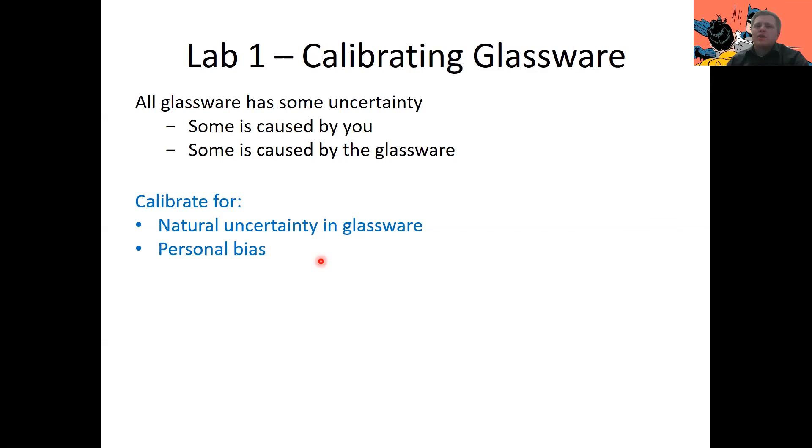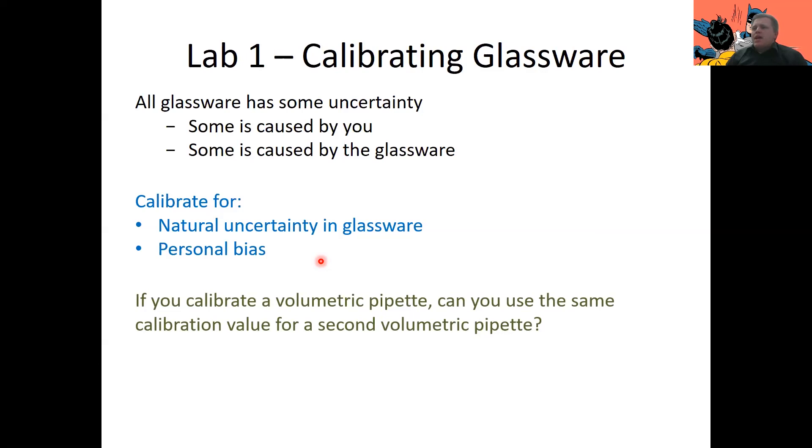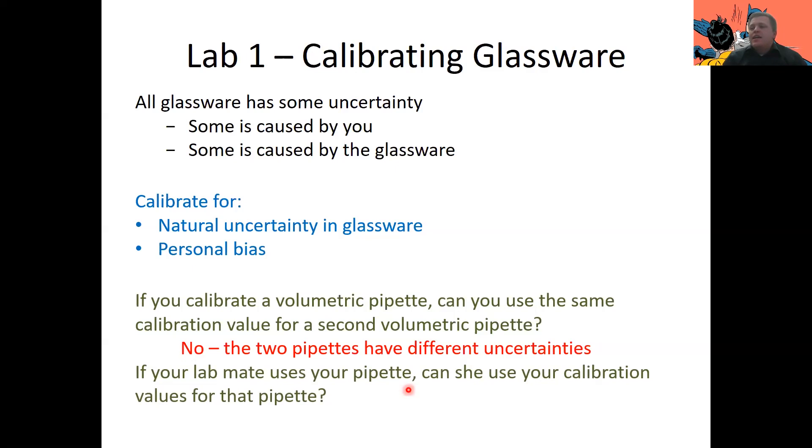So let me give you some practice questions. We'll see how you do with them. If you calibrate a volumetric pipette, can you use the same calibration value for a second volumetric pipette? Yes or no? Why? Well, the answer is a resounding no. So you can't use the same calibration value for two different pipettes. The reason is the two pipettes have different uncertainties. The curvature on their glass surfaces is going to be different. They're just different pieces of glassware. And while we try and make them identical, no two pieces of glassware are ever going to be perfectly identical. Just like no two snowflakes will ever be perfectly identical. Anyways, if your lab mate uses your pipette, can she use your calibration value for that pipette? And the answer again is no. You and your lab mate have different biases. You're going to measure slightly differently. And so everyone needs to measure or to calibrate each piece of glassware they used personally.